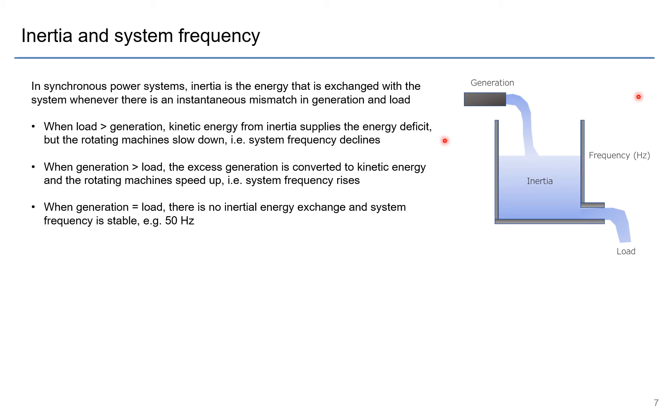So in the first case when you have more load than generation, basically you have more water coming out of the tank than generation coming in, and you have an energy deficit and inertia is supplying that energy for that load. But as a result your water level declines and so your frequency also declines.